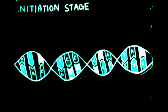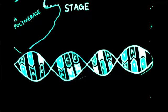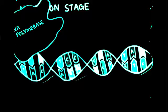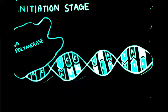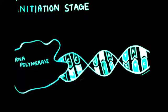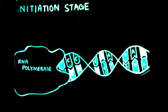During the initiation stage, the RNA polymerase uses the promoter region as a binding site. Binding results in the DNA double helix structure to unwind and open up.